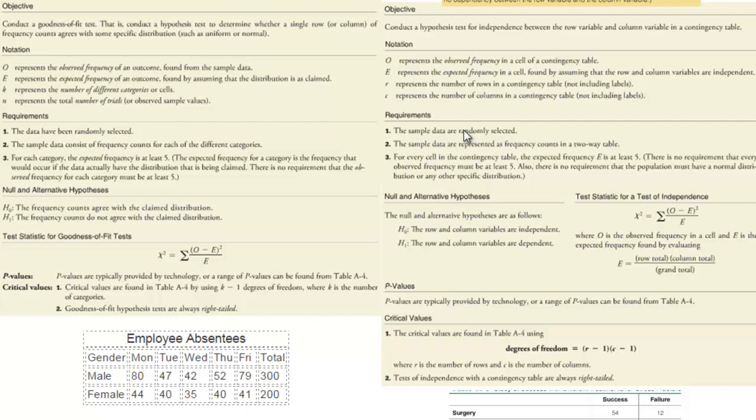Our requirements: randomly selected, data consists of frequency counts. For each category the expected frequency is at least five. Expected frequency, not observed frequencies. So we would have to calculate expected frequencies and make sure these are all above five. For every cell the expected frequency is at least five. So you can see a lot of the same requirements.